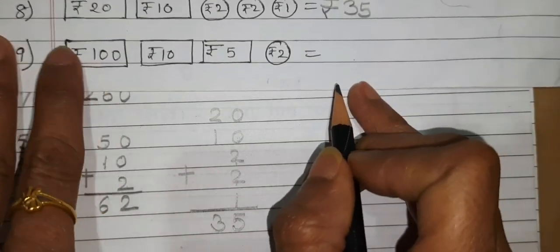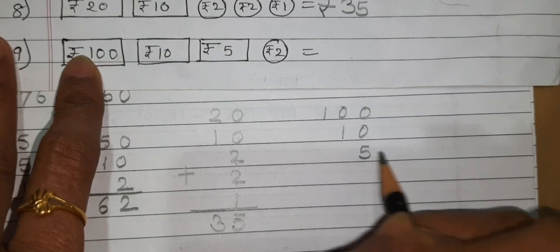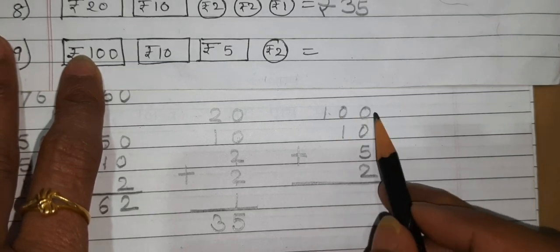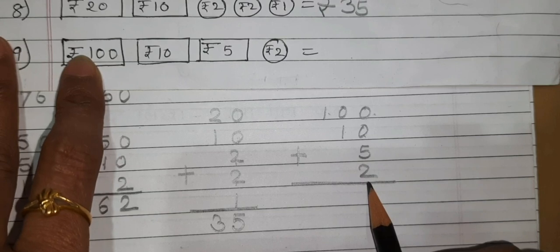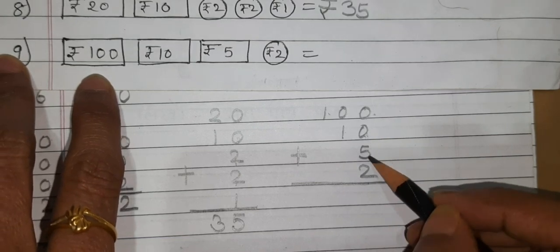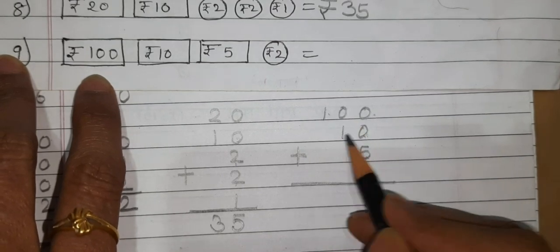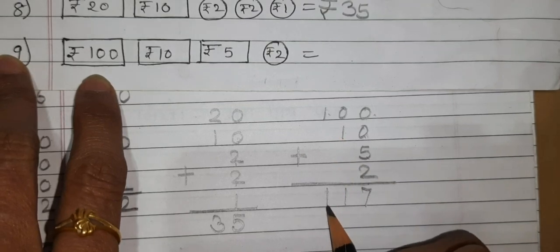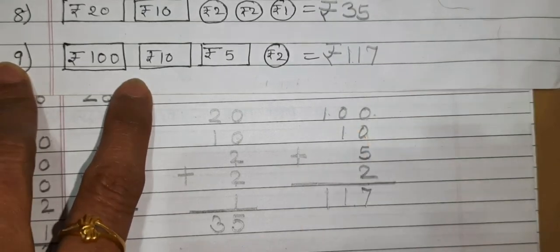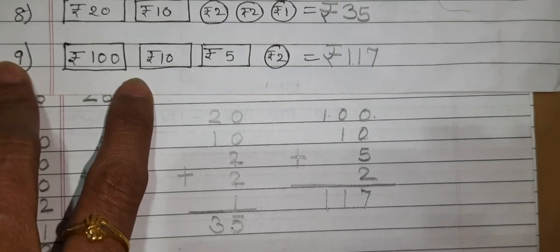Next one: Rupees 100, Rupees 100, Rupees 10, Rupees 5 and Rupees 2. Note how we align 3-digit, 2-digit and single digit numbers by place value. Ones: 0 plus 5 plus 2 is 7. Tens: 0 plus 1 is 1. Hundreds: 1 as it is. Answer is Rupees 117. Students, learn like this and we will meet you in the next session. Till then, bye bye.